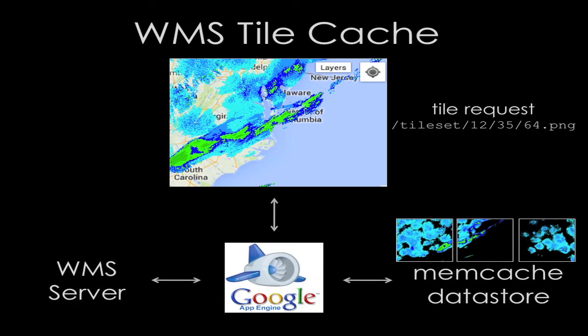A map is only as good as its underlying data, so we're always looking at trying to support more formats. Let me tell you about a few that we're either experimenting with or have actually released. WMS is one notable new format that we've released this year. If you want to add a WMS layer, you simply find your favorite WMS service, paste in its URL, you get a menu of options of layers that are public, select a few, and then you'll have imagery displayed on your map.